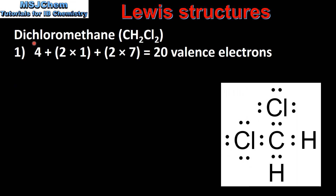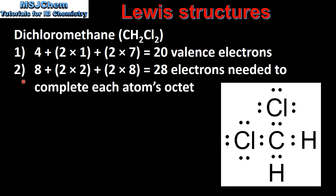Our next example is dichloromethane, which is CH2Cl2. We start by calculating the total number of valence electrons in the molecule. Carbon has 4 valence electrons, hydrogen has 1 valence electron, and chlorine has 7 valence electrons, giving us a total of 20 valence electrons. Next we calculate the number of electrons needed for each atom to complete its octet: carbon needs 8, hydrogen needs 2, and chlorine needs 8, which gives us 28 electrons needed.